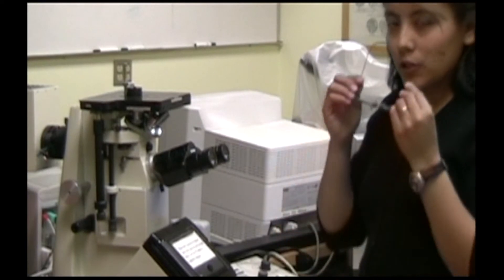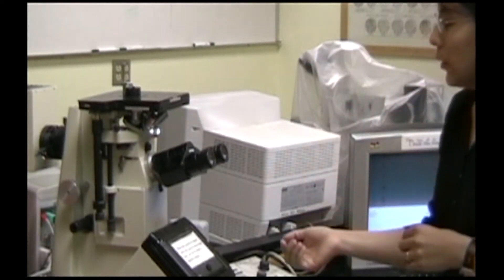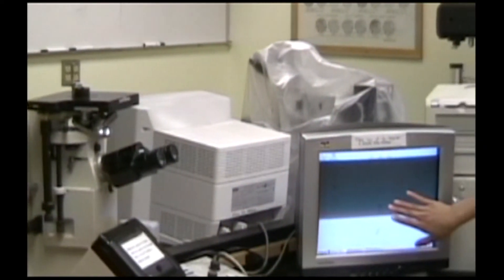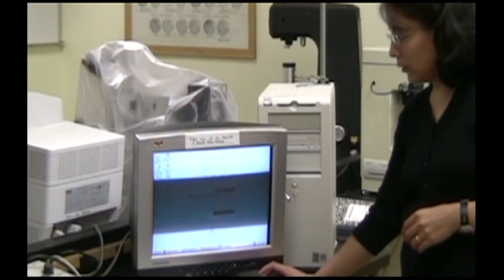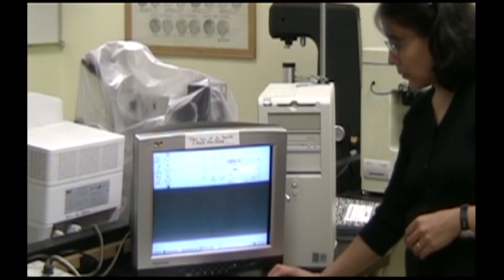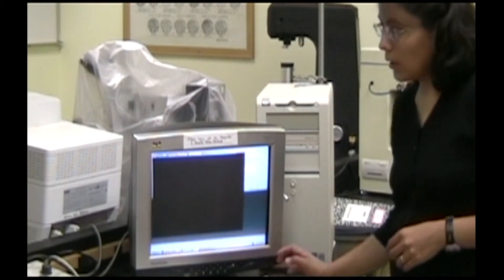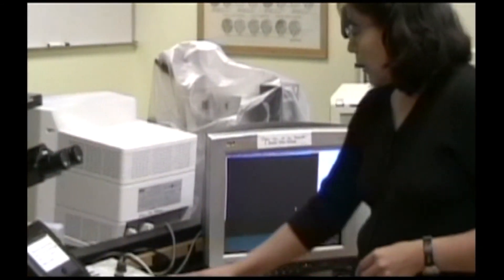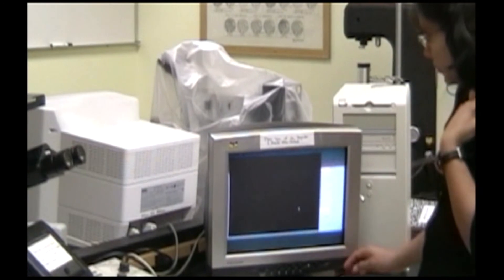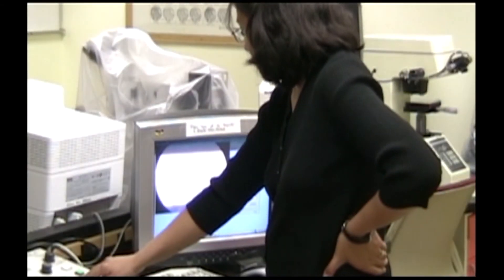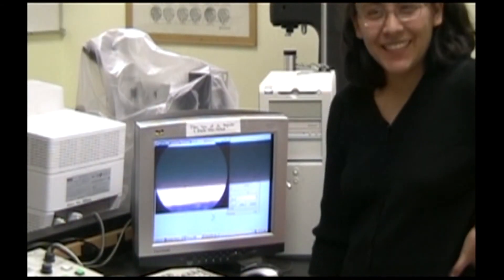If you want to take a picture of your sample surface, you open the software here on this computer. It's a pixel-link capture software. You pull out a knob here that's labeled on the side of the optical microscope and you turn on the exposure box. You should also open the shutter.